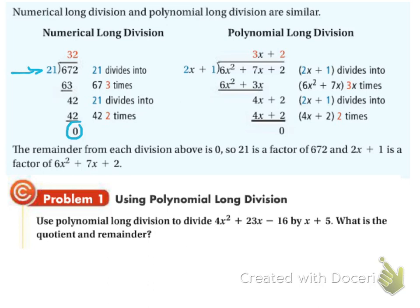When you do polynomial long division, you're not going to divide 2x plus 1 into the whole thing. What you're going to do is take just the 2x and see if that goes into 6x squared. So what you're really doing is 6x squared divided by 2x. 6 divided by 2 is 3, and x squared divided by x is x. Notice where I put the 3x — I put the 3x over the x term under the division sign, just to keep everything in line.